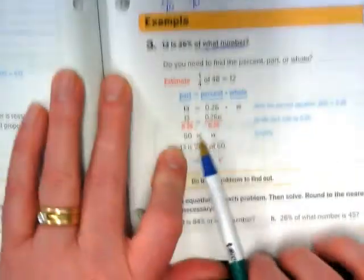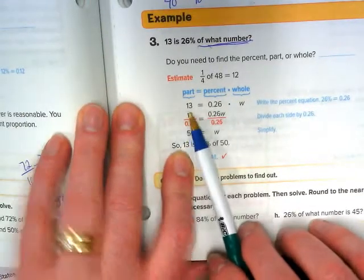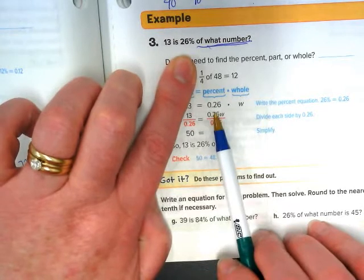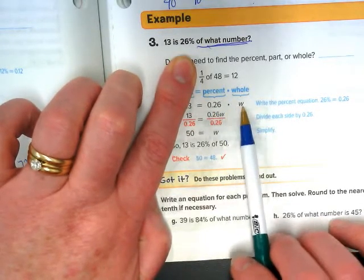So, again, there's an estimate, but let's skip down to the problem. 13 is 0.26 is our 26% times the whole.